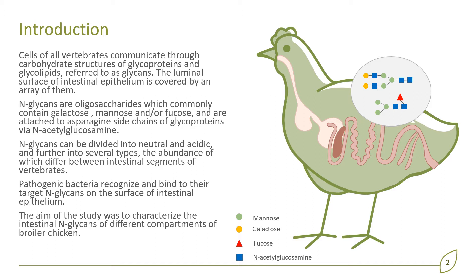The luminal surface of intestinal epithelium is covered by an array of them. The aim of the study was to characterize the intestinal N-glycans of different compartments of broiler chicken.